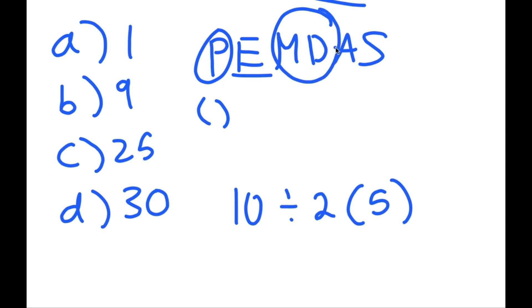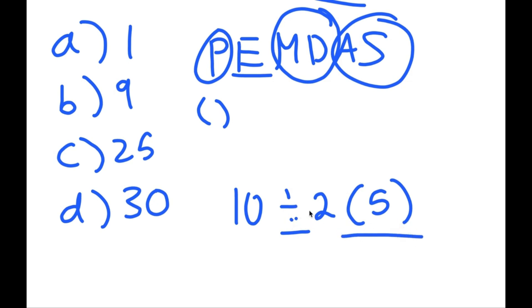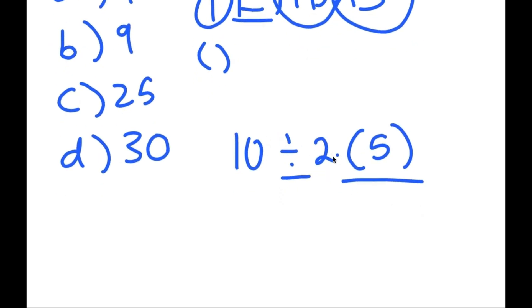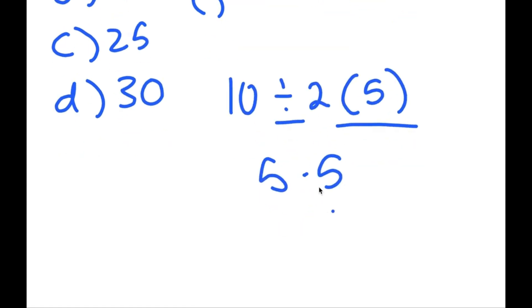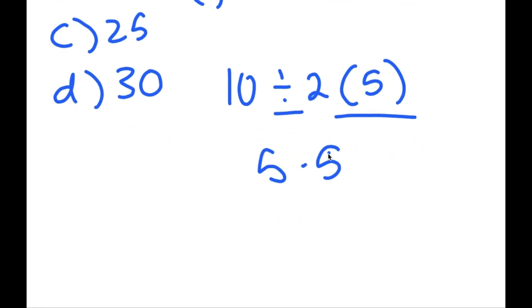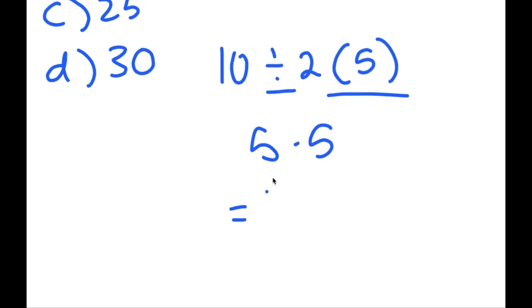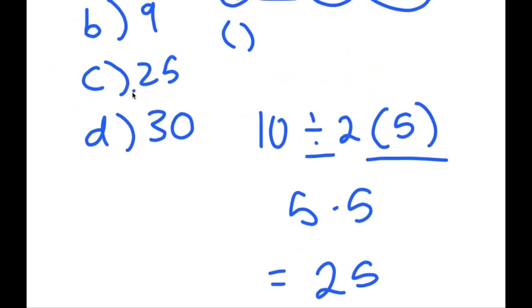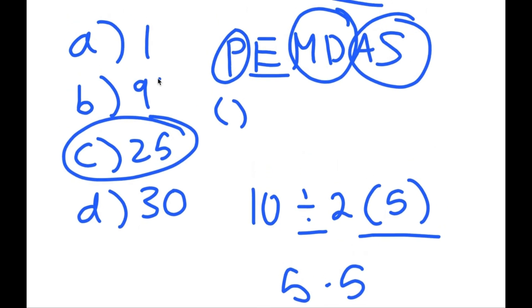Next is multiplication and division — these two are grouped, just as addition and subtraction are grouped. We first start with multiplication and division, whichever comes first. So we have division and then multiplication, meaning we first start with division. So 10 divided by 2 is 5, and now I have 5 times 5. The only thing left is multiplication, so 5 times 5 is 25. So C, 25, is my answer.